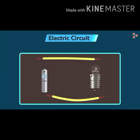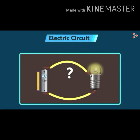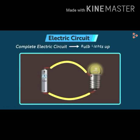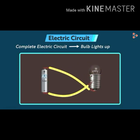How long will this energy keep flowing? The energy flows as long as the circuit is connected or until the cell dies out. The circuit must be complete for the bulb to light up. If we interchange the wires, the circuit is still completed and the bulb will still glow.